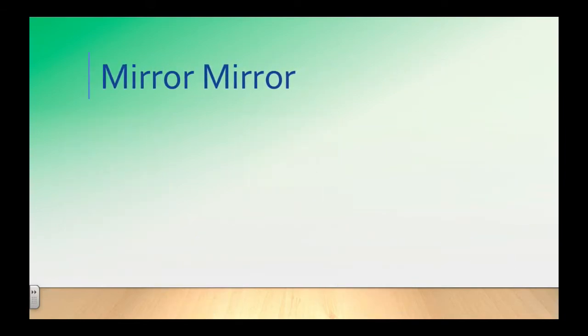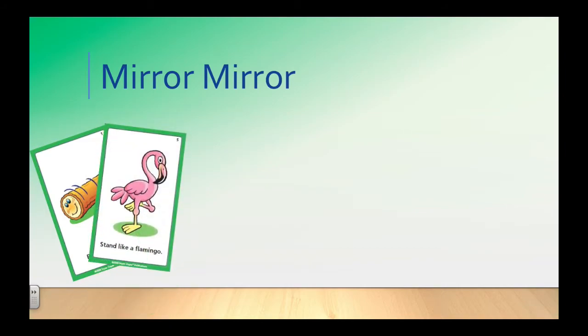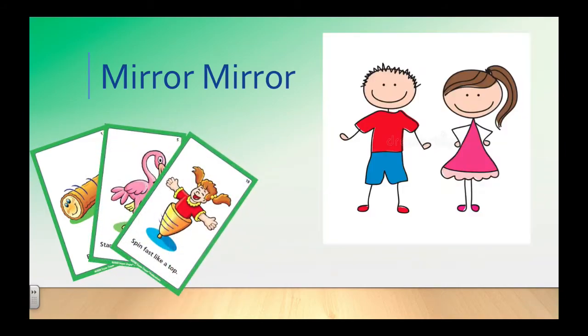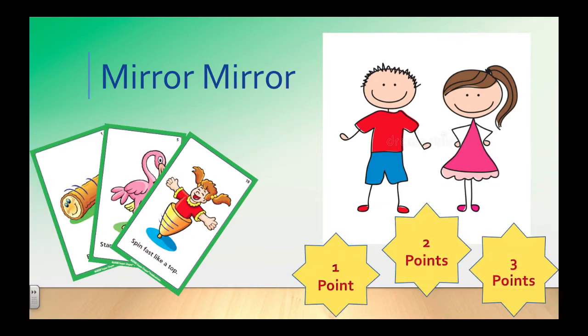To play Mirror Mirror, deal three to five cards to each child. Pair each child with a partner. Have one child in each pair perform the activity shown on his or her card. Instruct the partner to mirror the activity. Give each pair of children a point for each activity performed correctly. The pair with the most points wins.